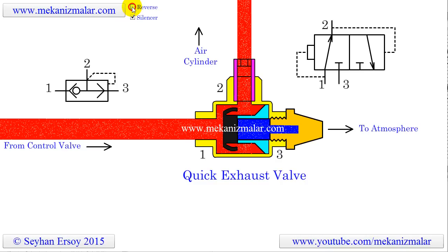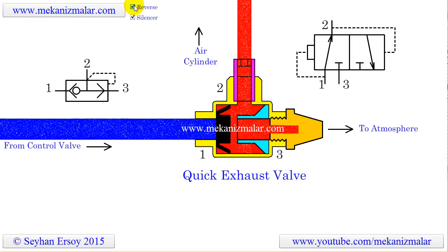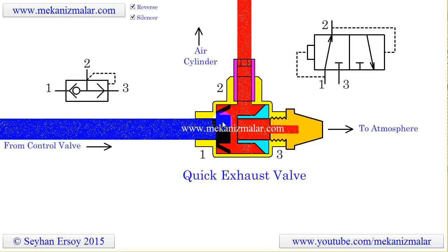When the pressure is reduced in port 1, the high pressure air inside the cylinder rushes toward port 2. This pushes the rubber spool backward and blocks the inlet port 1. The only way out for the air is port 3, which is connected to the atmosphere.